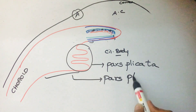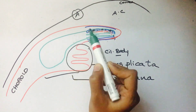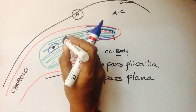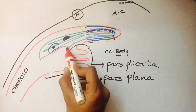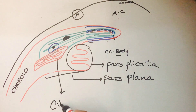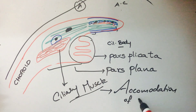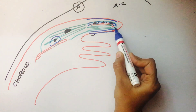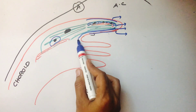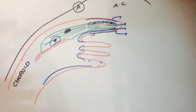Two important parts of the ciliary body: pars plana, where there are ciliary processes, and the flat part is pars plana. Note that the stroma of the iris extends behind into the ciliary body as the stroma of the ciliary body. Here also we have connective tissue and collagen fibers. One important muscle in the ciliary body is the ciliary muscle, whose function is accommodation of the lens.